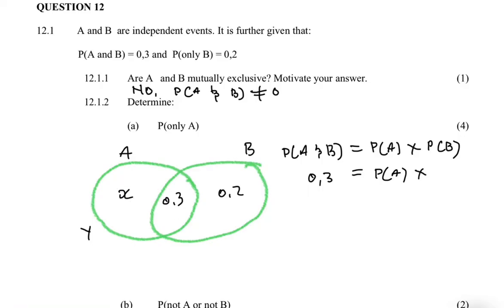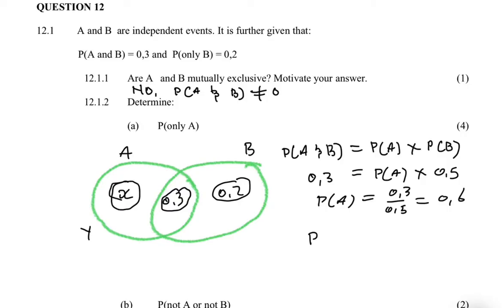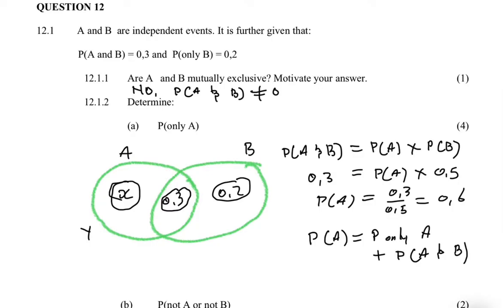The probability of B is 0.2 + 0.3 = 0.5. So P(A) = 0.3 divided by 0.5 = 0.6. Now we want the probability of only A, which is x. From the Venn diagram, P(A) equals P(only A) plus P(A and B), so: 0.6 = P(only A) + 0.3.